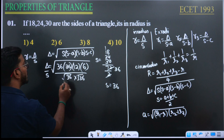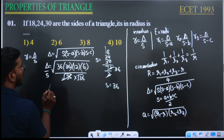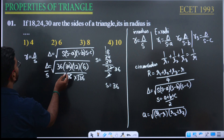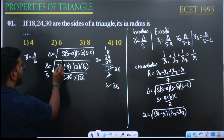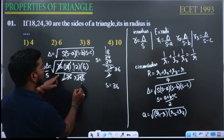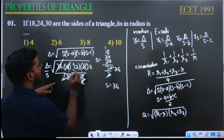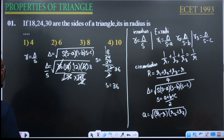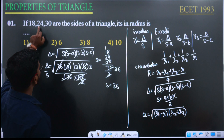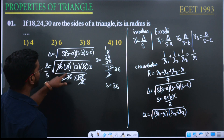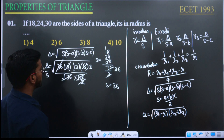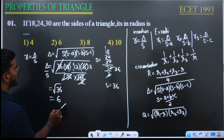Now delta by s: root of 36 times 18 times 12 times 6, divided by 36. The 36 cancels. Simplifying: 18 times 12 times 6 under the root. Breaking down: 18 is 2 times 9, 12 is 4 times 3, 6 is 2 times 3. Working this out gives root of 1296, which is 36. So delta by s equals 36 divided by 6, giving the answer 6.